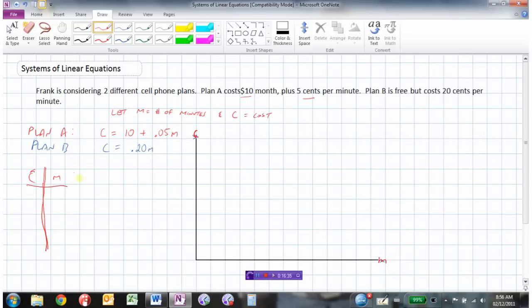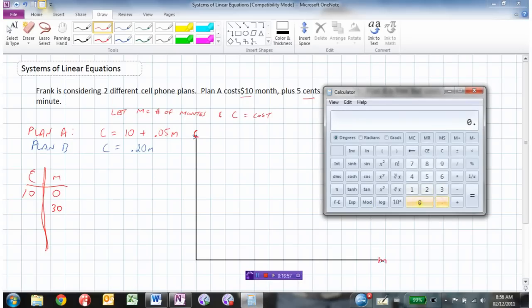So let's make some minutes up. When M is 0, the cost is 10. If you talked for 30 minutes, 0.05 times 30 would be, we could check this out in the calculator just to make sure we're doing it right. So that would be 1.5 times 10, which is 11.5.